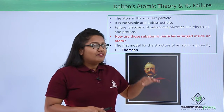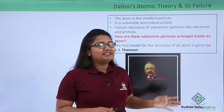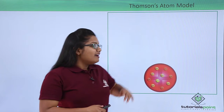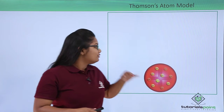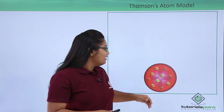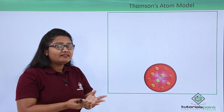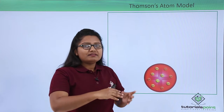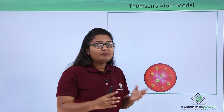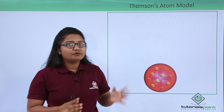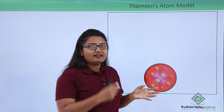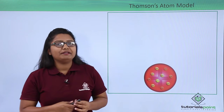So let us see how he visualized the atom to be. He visualized the atom to be something looking like this — where we have a spherical body which has positive charge uniformly distributed throughout, and the electrons, which are negatively charged, are simply studded on its body.